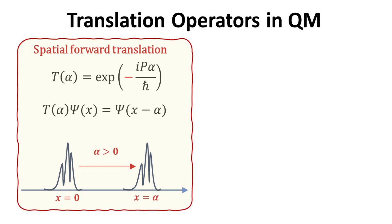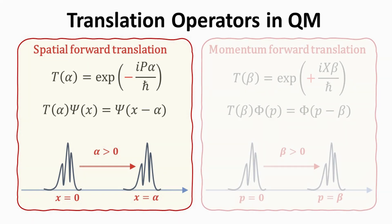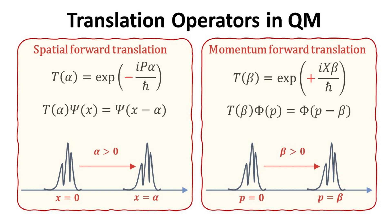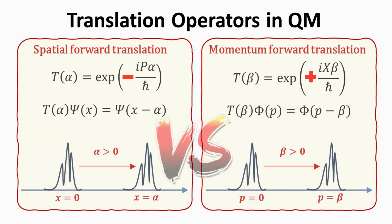The translation operator in quantum mechanics allows us to rigidly shift the wave packet in position x and momentum p. In this video, we will learn why the translation operators are written in the form as shown, and the different signs in their exponent for spatial and momentum forward translation. We will also discuss the spatial and momentum translation operation on the ket, bra, and wave functions, and end with a concrete example using the Gaussian wave packet.